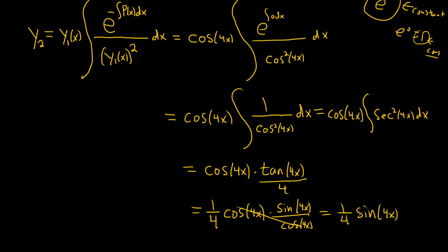And the 1 fourth, again, it's negligible. It's just a constant. It doesn't really matter because differentiation is linear, so like if sine of 4x is a solution, so is 1 fourth sine of x. So we can drop the 1 fourth and just say the other solution is sine of 4x. And that would be the final answer.